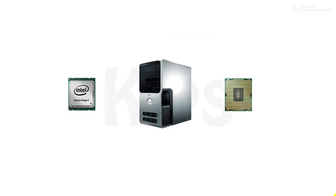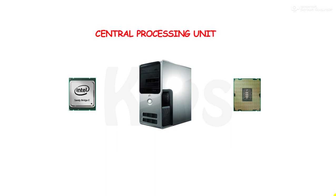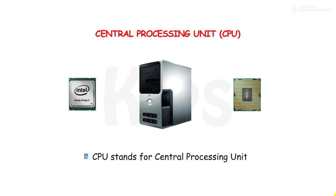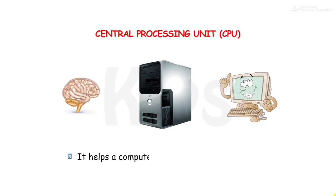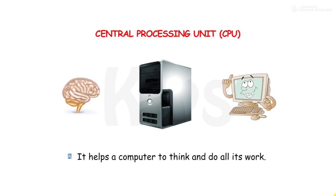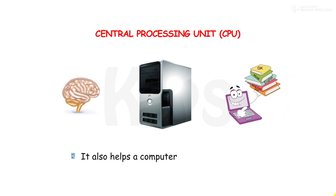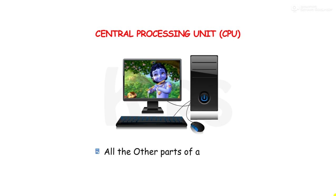Let us learn about the most important part, i.e. Central Processing Unit, CPU. CPU is called the brain of a computer. It helps a computer to think and do all its work. It also helps a computer to remember things. All the other parts of a computer are attached to CPU by wires.